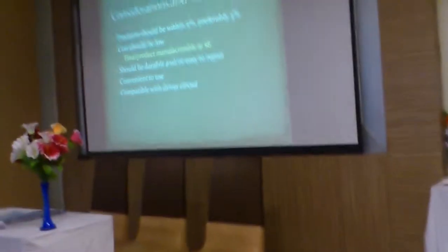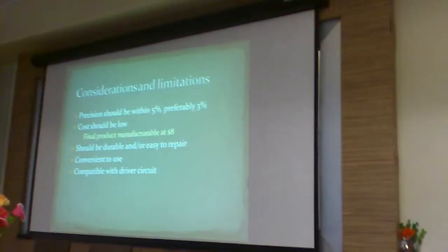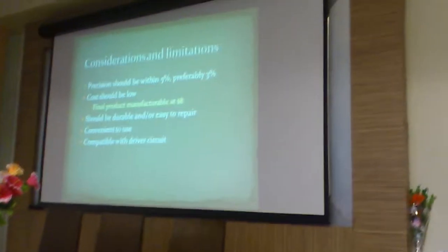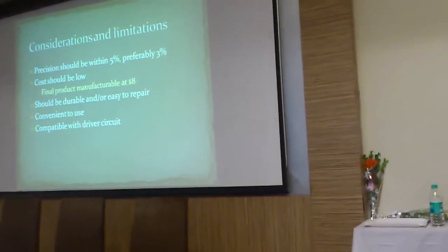Constraints and limitations: precision should be within 5%, preferably 3%. Cost should be low — the final product is manufacturable at $8. When selling at $99, you are making almost 10 times the money, and still make good profit after commissions. It should be durable and easy to repair, conveniently used and compatible with driver circuits. There are two types of drivers: voltage driver and current driver. We will prefer to use a current driver here — specifically the Howland current pump. You can find information about it on Google; it has sourcing and sinking capability.